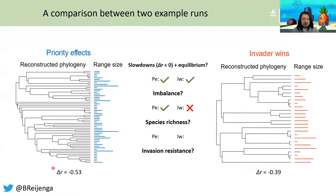Thirdly, species diversity is higher under the priority effects model in contrast to the invader wins scenario. This can be explained by looking at the range size distribution. Ranges are very equal in size under the invader wins scenario, with a couple of young lineages with very small ranges. However, under the priority effects model, there are a lot of old species with also very small ranges. It is this maintenance of old and rare lineages under priority effects that results in higher species richness.